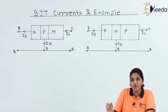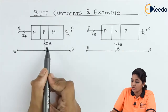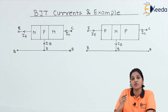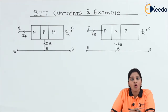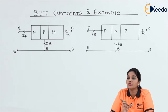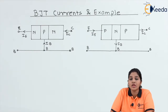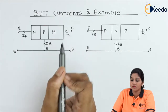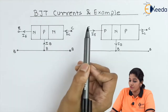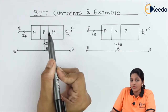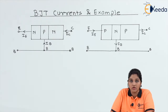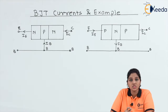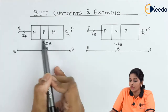At the base terminal, electrons get combined with holes and form a current that is IB. The remaining electrons move towards the collector region. In the base region, not all the electrons get combined with holes because the width of the base region is small. Therefore, very few electrons get combined with holes. The remaining electrons move towards the collector and form a current called collector current IC.